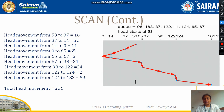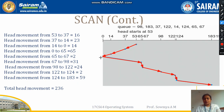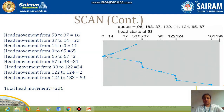The advantage of SCAN over Shortest Seek Time First is that each queue element does not have to wait too long, regardless of distance. However, a disadvantage of SCAN is that unwanted movements occur — for example, the head moves from 14 all the way to 0 even when there are no requests there. This unnecessary movement is a drawback of the SCAN method.